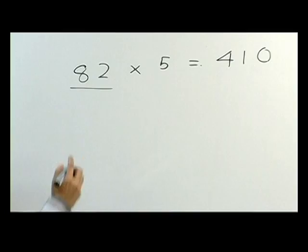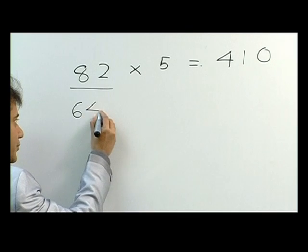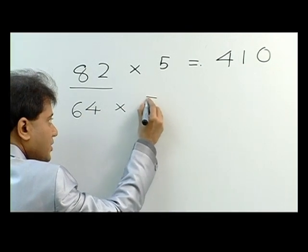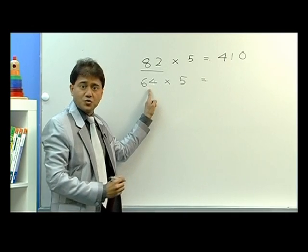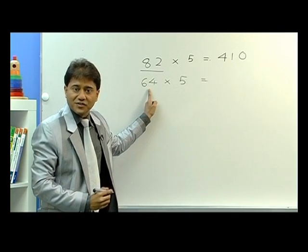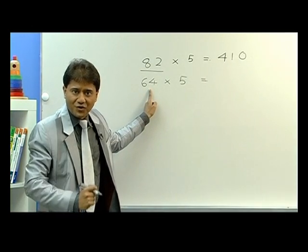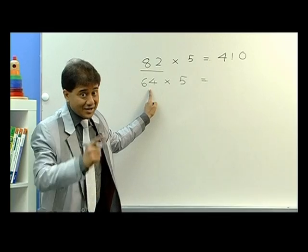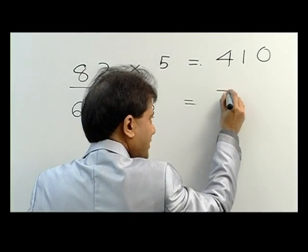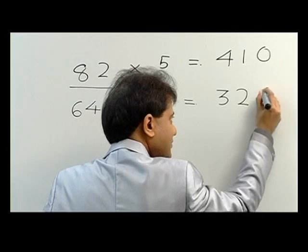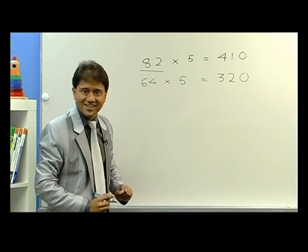Let me take another example: 64 to be multiplied with 5. We first do half of 64. What is half of 64? It's 32. So you write 32 and just put a zero. Isn't that easy?